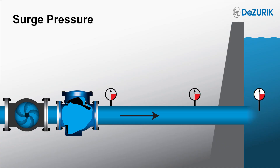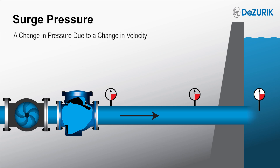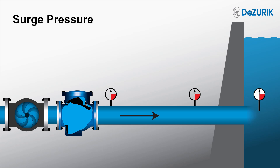What is surge pressure and what causes pressure surges? Surge is a change in pressure resulting from a change in fluid velocity. One cause of surge pressure is from velocity changes that occur during opening and closing of check valves.